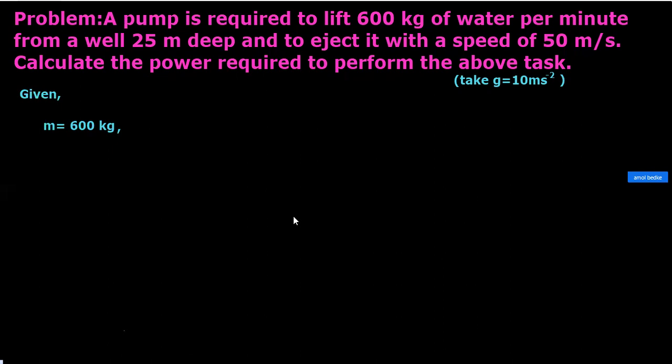Mass is given as 600 kg, height h = 25 m, velocity v = 50 m/s, time is one minute, because it is per minute, so that's why one minute means 60 seconds. And they said that gravity, the acceleration due to gravity, you take it as g = 10 m/s².